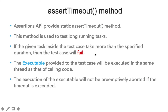For example, if we give a timeout of 1 millisecond but the executable takes 10 milliseconds, we have to wait all 10 milliseconds until the test case completes. This is a disadvantage of assertTimeout — the executable will not be aborted if the timeout is exceeded; it will still continue to run all the code. Once the executable finishes, if it took more than the time provided, the assertion will fail; otherwise it will pass.